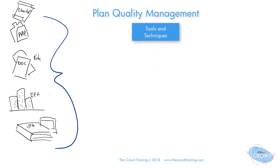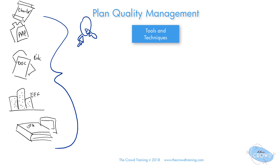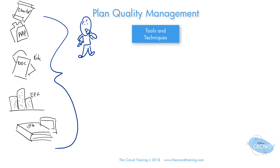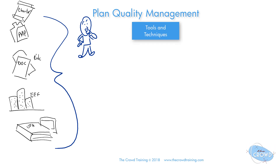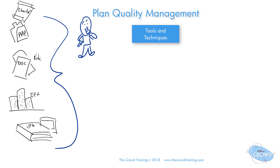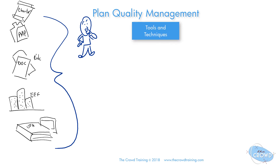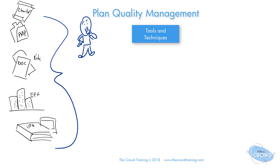Now let's go into the tools and techniques of Plan Quality Management. The first is expert judgment — the idea being that there are various people in the know. Especially in quality management, you're probably going to have quality professionals who know the standards and methodologies for collecting data, setting up the right metrics, and performing quality control.